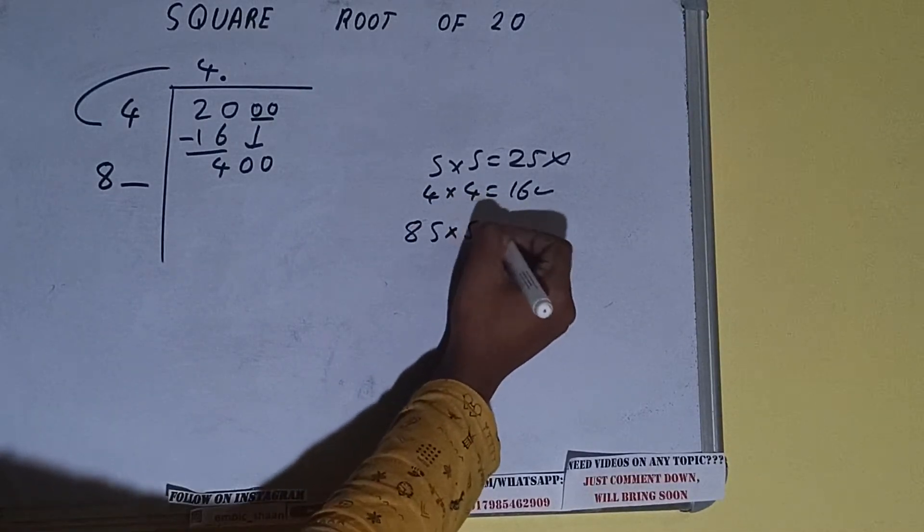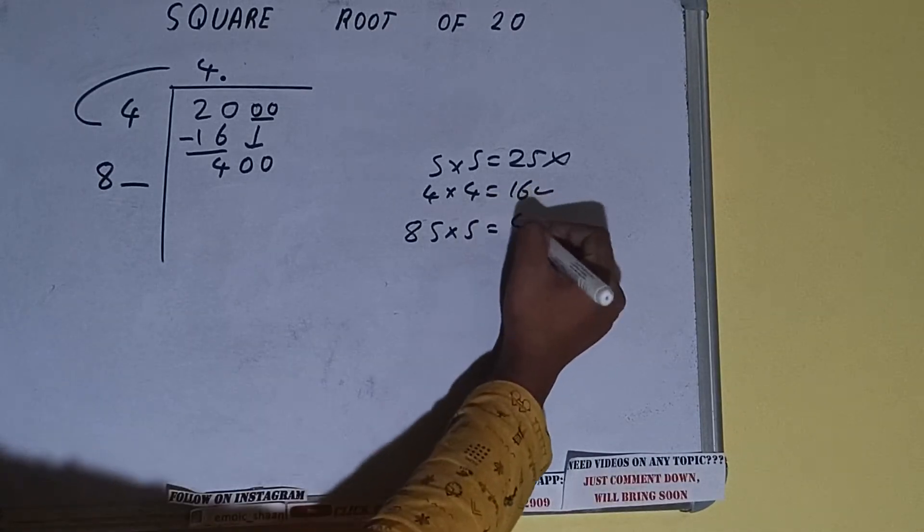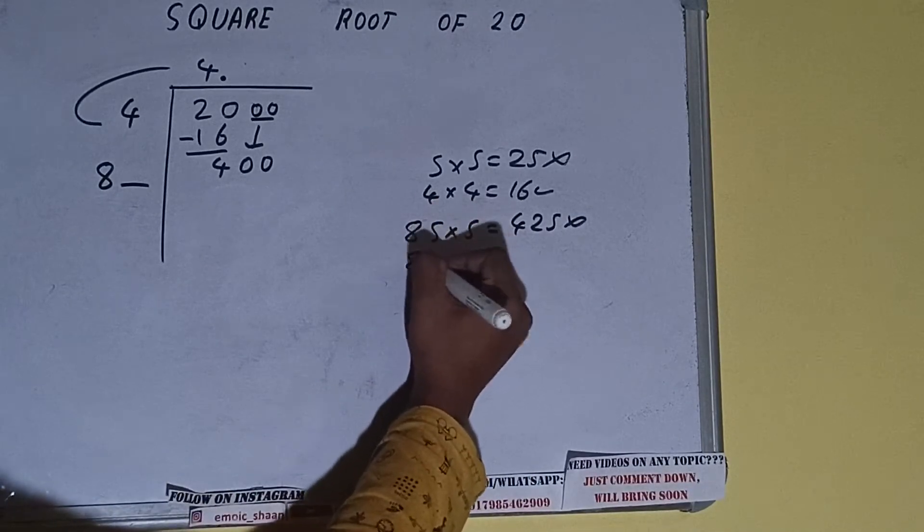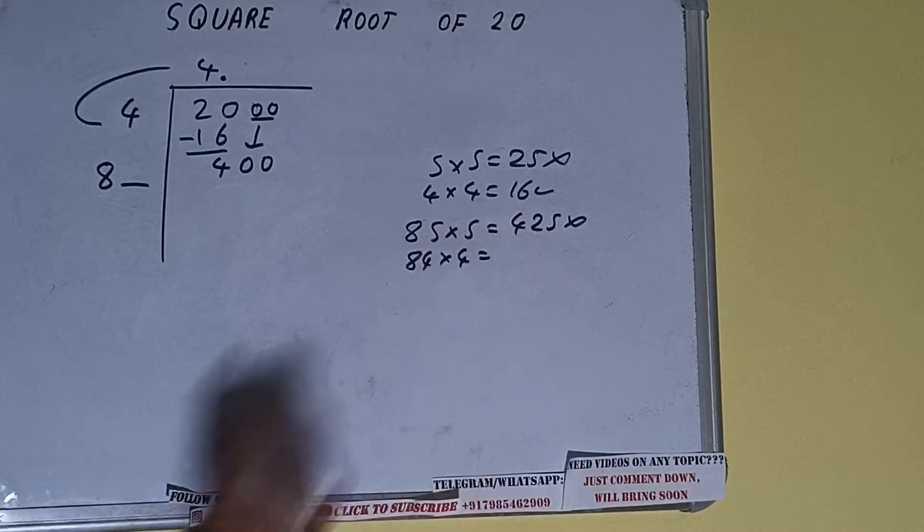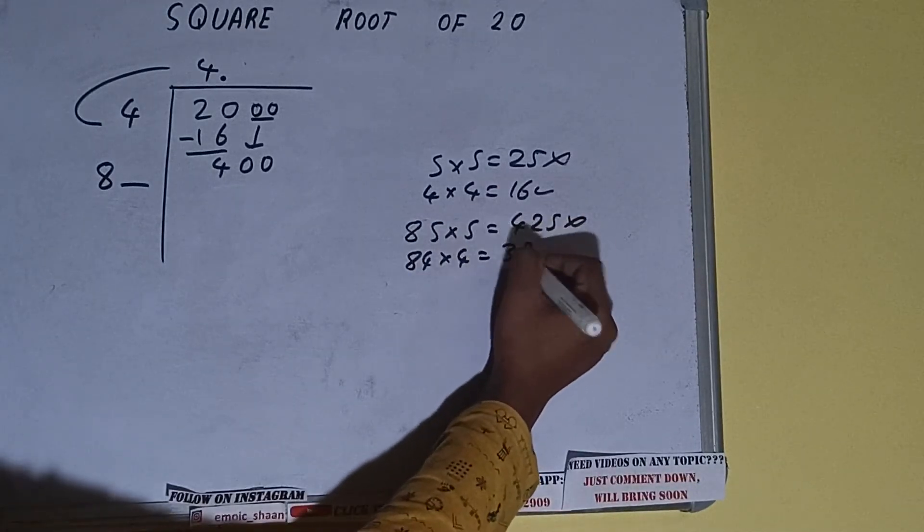5 times 85 into 5, let's try. It will be 425, which is slightly bigger than 400, so we cannot use it. Let's try 4 times 84 into 4. Let's try. It will be 336, which is good to use.